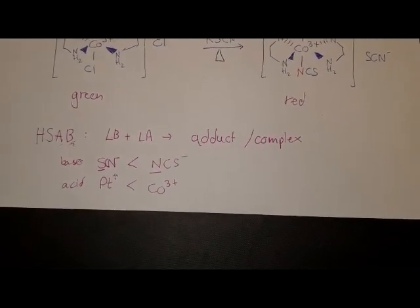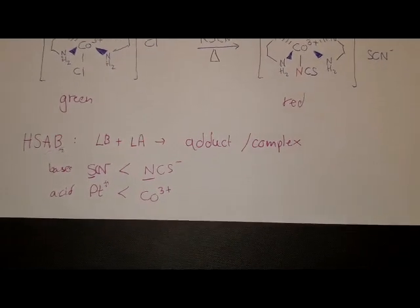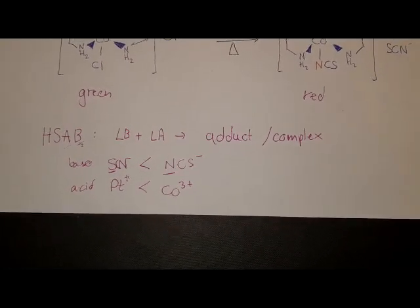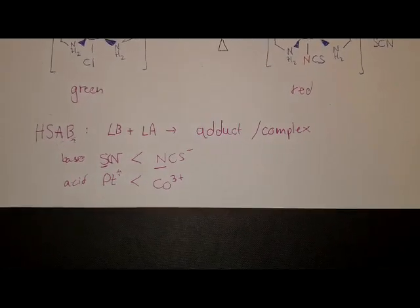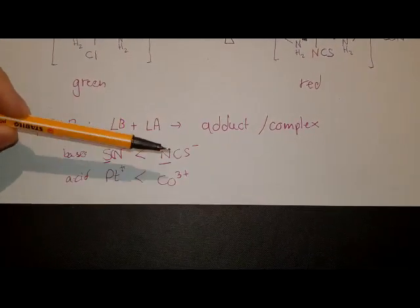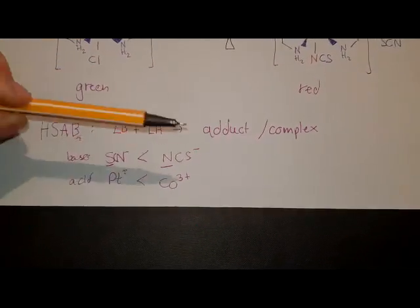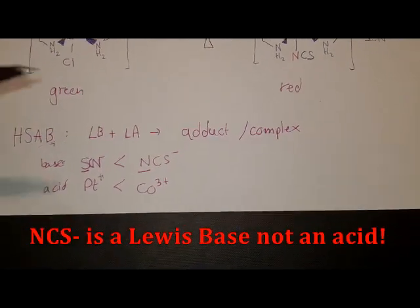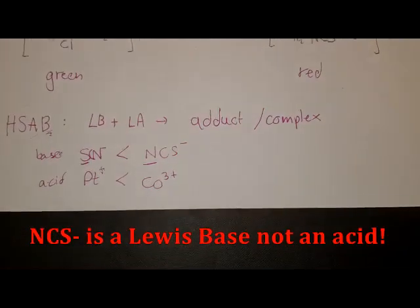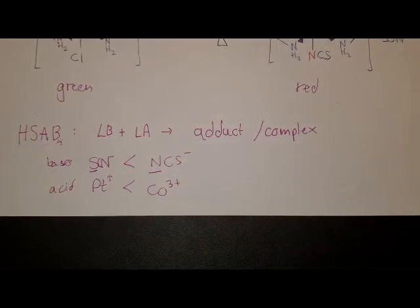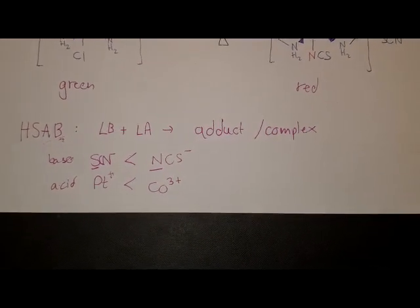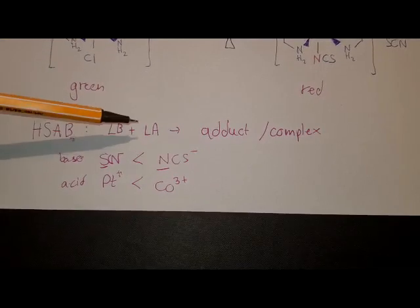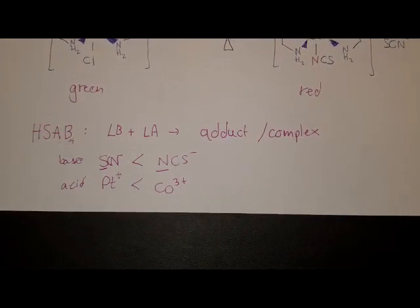And so, harder Lewis acids prefer bonding to harder Lewis bases. So cobalt 3+ is a hard Lewis acid and the isothiocyanato ligand is a harder Lewis base than the thiocyanato one. So the hard-hard combination is preferred, and that's why we will form the isothiocyanato complex in the end.